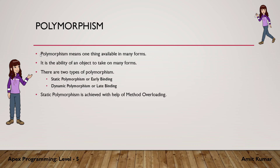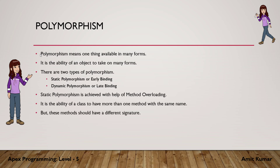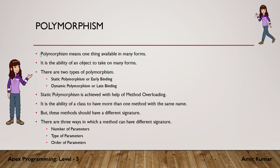Static polymorphism is achieved with the help of method overloading. Method overloading is the ability of a class to have more than one method with the same name, but these methods should have a different signature. There are three ways a method can have a different signature: number of parameters, type of parameters, and order of parameters. For static polymorphism or method overloading, we can have more than one method with the same name but with different signature.